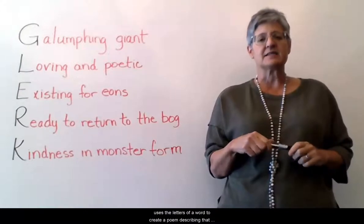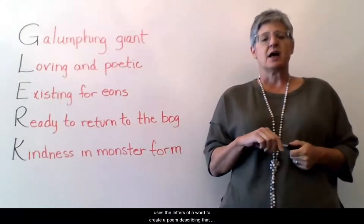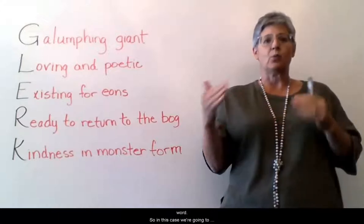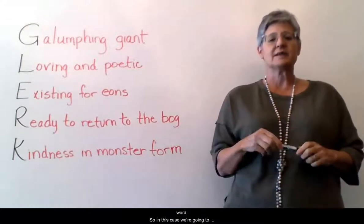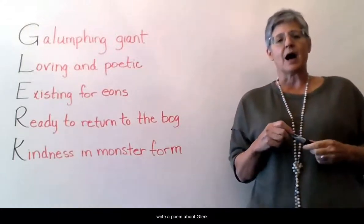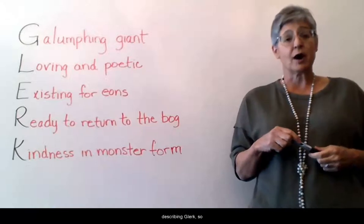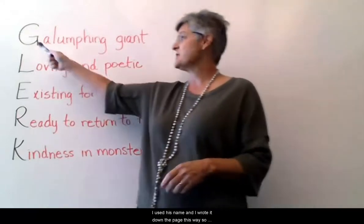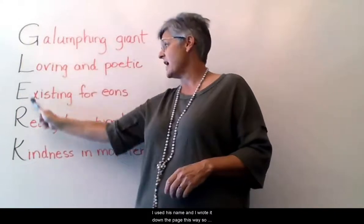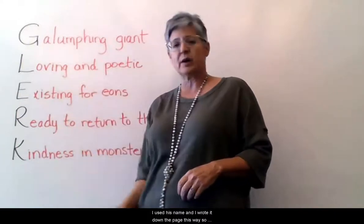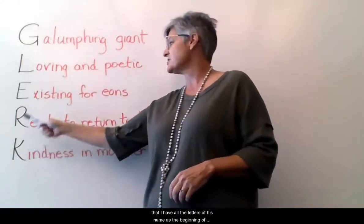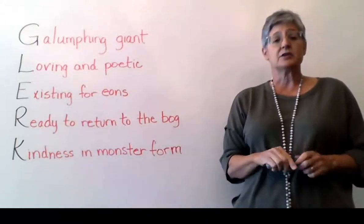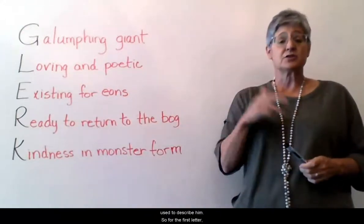What an acrostic poem does is use the letters of a word to create a poem describing that word. So in this case we're going to write a poem about Glurk, describing Glurk. I used his name and wrote it down the page so that I have all the letters of his name as the beginning of a word or phrase used to describe him.